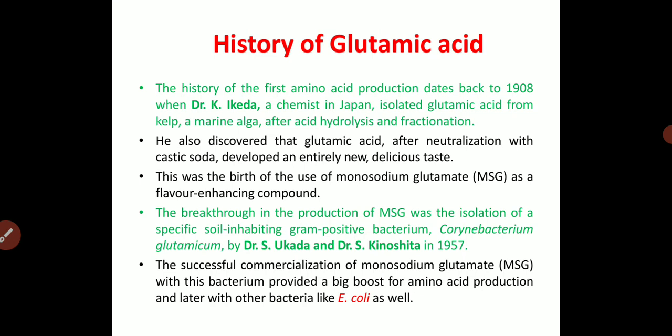Monosodium glutamate is being employed in most of the food sector — in commercial packed food items, street food, and hotels. This monosodium glutamate, simply called ajinomoto, is a taste-enhancing compound used to attract consumers. The breakthrough in the production of monosodium glutamate was the isolation of a specific soil-inhabiting gram-positive bacterium called Corynebacterium glutamicum.